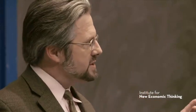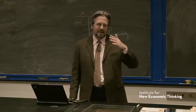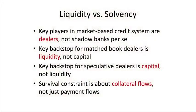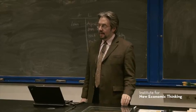Second: you want to distinguish between the match book dealers and the proprietary dealers — the speculative dealers — and focus on liquidity for the match book dealers and capital for the proprietary ones. If you try to put lots of capital requirements into a match book dealer it may do no good; you need a liquidity backstop there. Fourth: the survival constraint is not just about payment flows but also about collateral flows, because this is a system of secured funding.